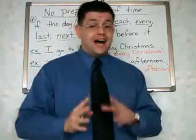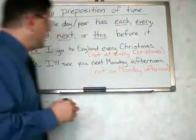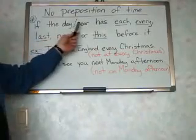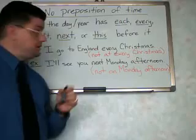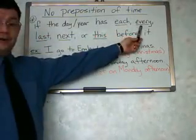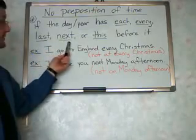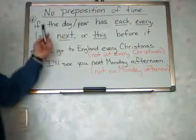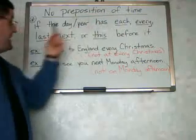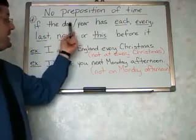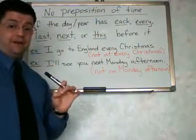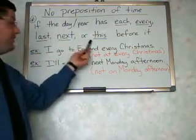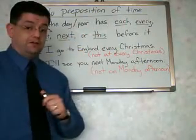Here are the rules for not using a preposition of time. There is no preposition of time if the day, the year, or the specific time has the words each, every, last, next, or this before it. I'll say it again: there is no preposition of time if — only if — the day, year, or specific time they're talking about has the word each, every, last, next, or this before it. Let me show you a couple of examples.